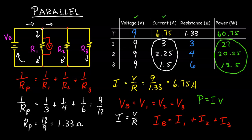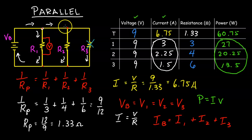Lastly, if you disconnect one of these electrical elements — imagine if these were bulbs — the other bulbs would stay on, because the remaining bulbs still form a closed circuit with the battery. There's still a complete loop, so they would stay on.